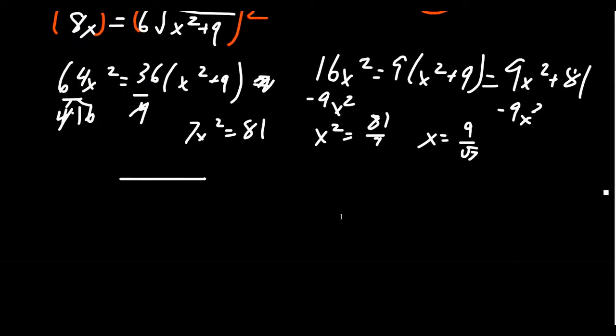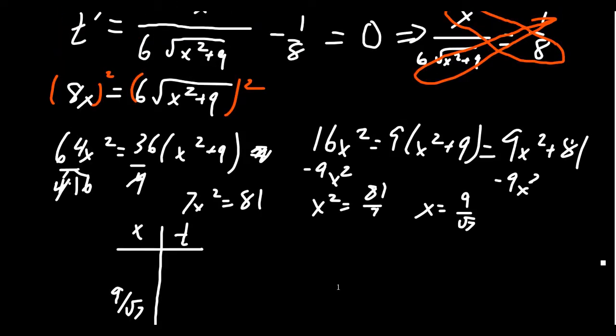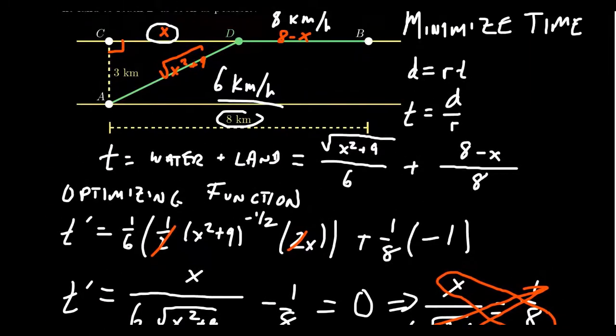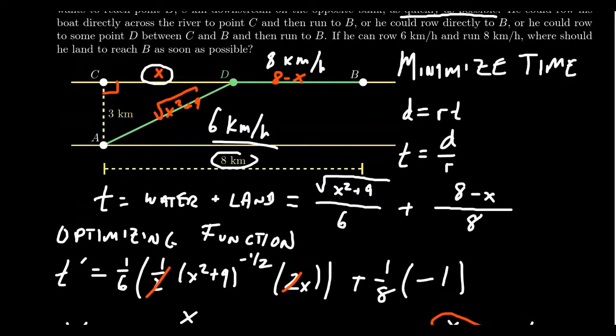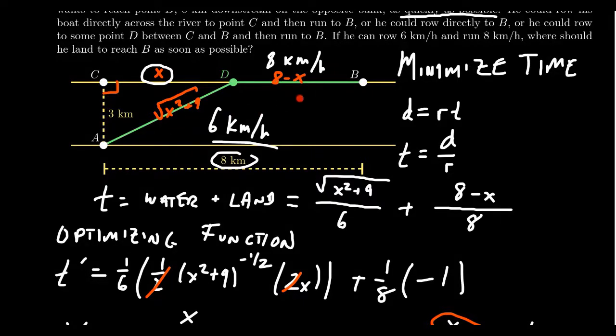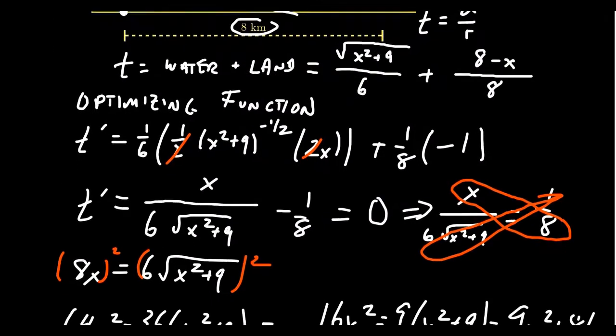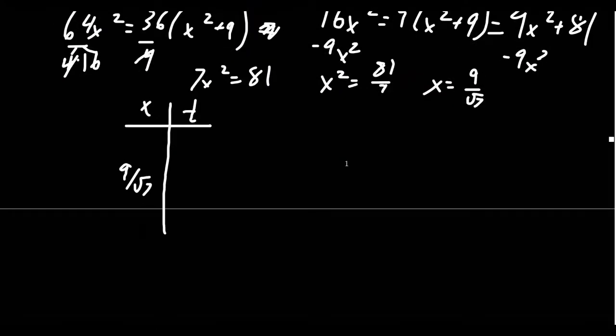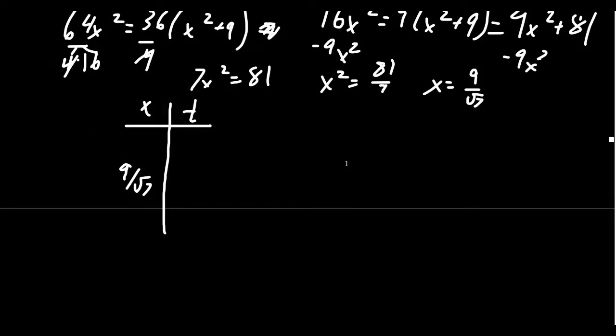But there are some domain concerns we should have. 9 over the square root of 7 sits in the middle. What's the domain? If we come back to the original picture, we talked about the two extremes one could take. One could go directly across the water to C, that would be setting x equal to 0. The other possibility is you take A directly to B, in which case that would be taking x equal 8. So that's the domain of the problem, from 0 to 8. 9 divided by the square root of 7 is approximately 3.4 kilometers, so it does sit inside there.